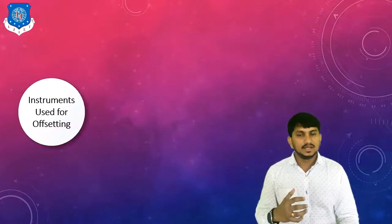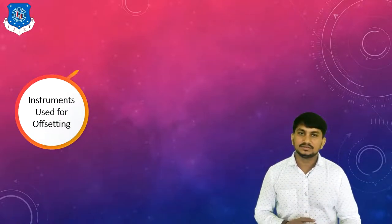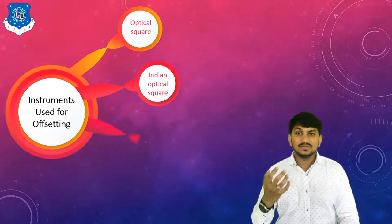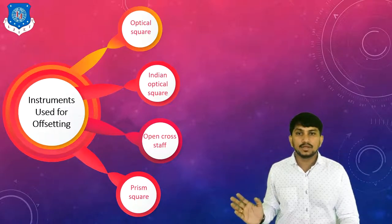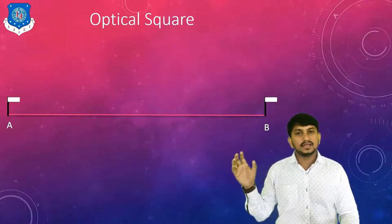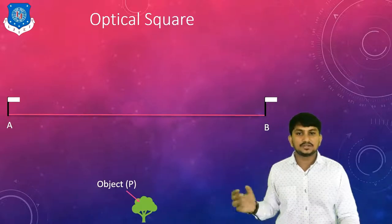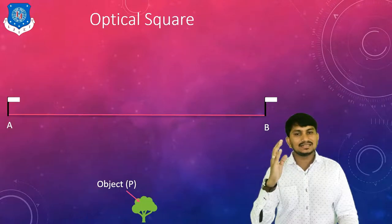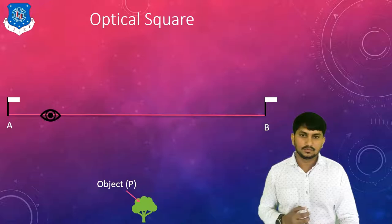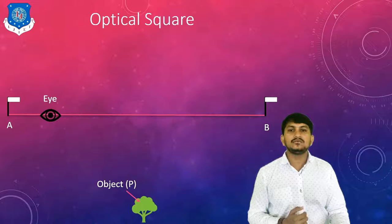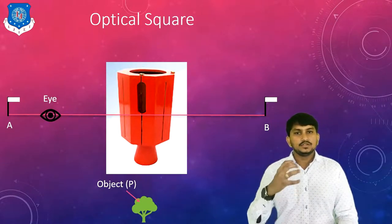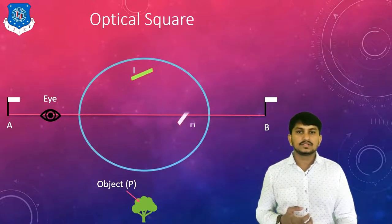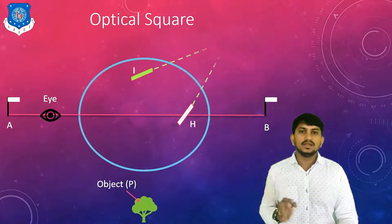Now we will discuss instruments used for offsetting. There are four instruments: optical square, Indian optical square, open cross-staff, and prism square. For the optical square, suppose there is a chain line with end stations A and B and an object P. We stand with the optical square on the chain line. The optical square has two mirrors, an eye, and an edge at an angle of 45 degrees, with two side vents C and E from which we can observe both mirrors and the station.